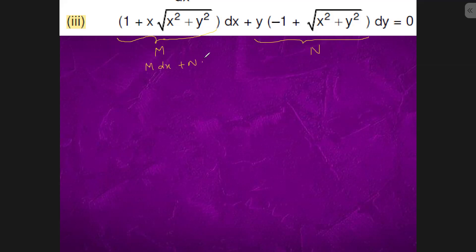So dm/dy is what? It is x by 2 root under x square plus y square into 2y, which is xy by root under x square plus y square.